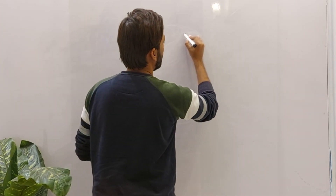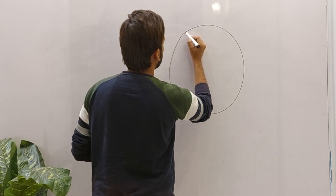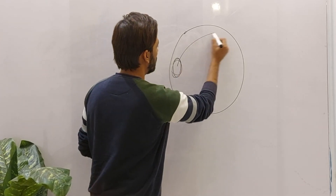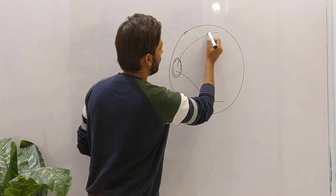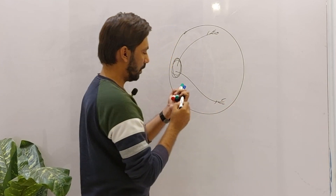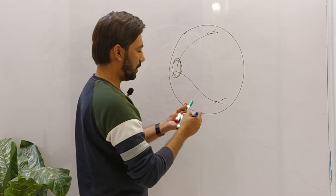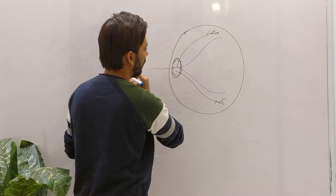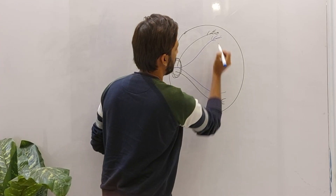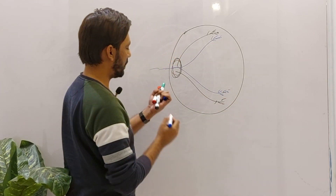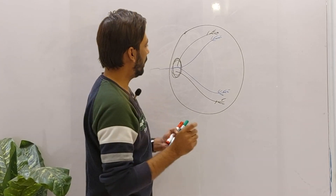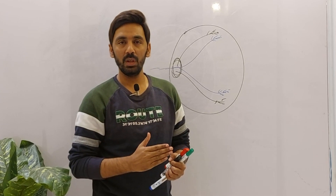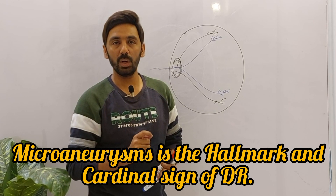The first abnormal sign is microaneurysms. Looking at the fundus, we can see the arteries, their branches, and the veins carrying deoxygenated blood back to the optic disc — these are branches of the central retinal vein. Microaneurysm is the hallmark, or cardinal sign, of background diabetic retinopathy.